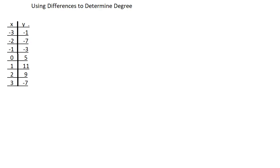Hello everyone. In this video we are going to use differences to determine the degree. That means we are given a table of values and we know we have a polynomial, but we don't know anything else about it. We don't have to graph this to determine the degree. What we have to do is find what is known as common differences, or just differences.